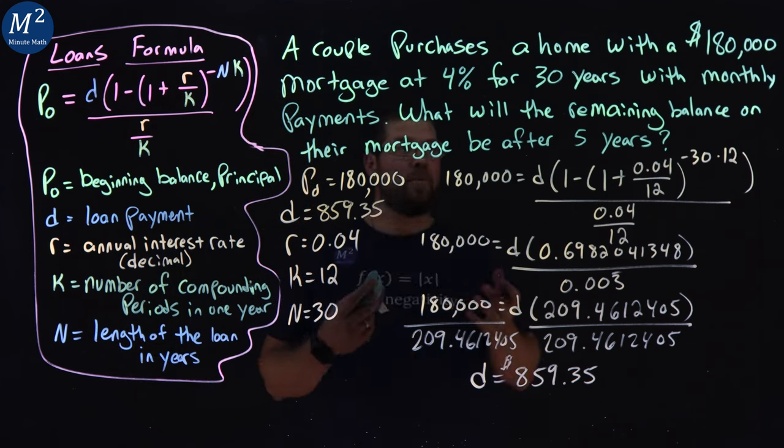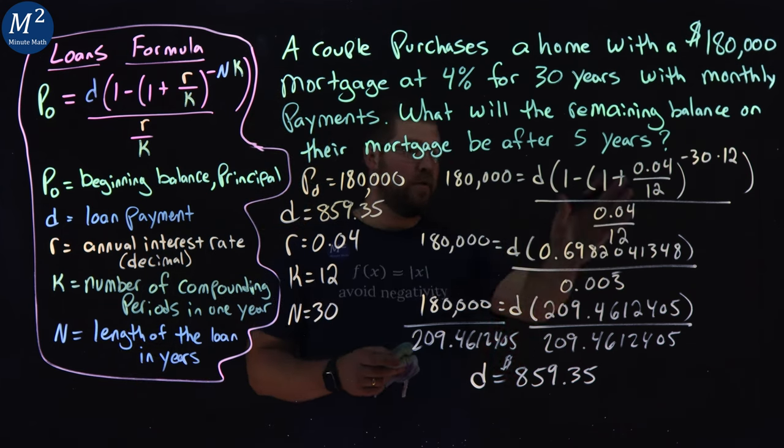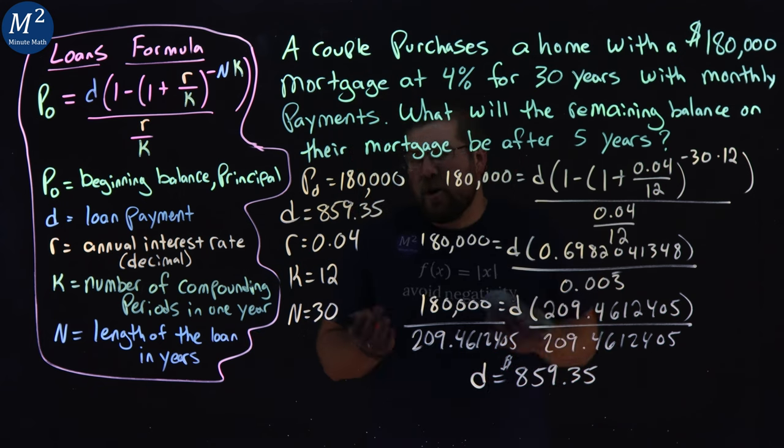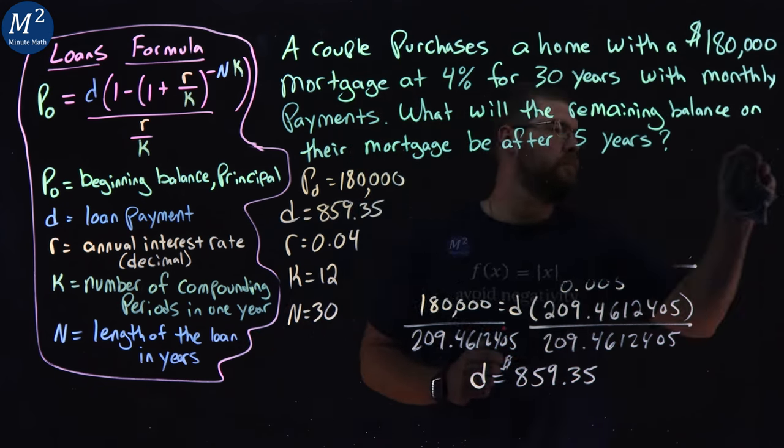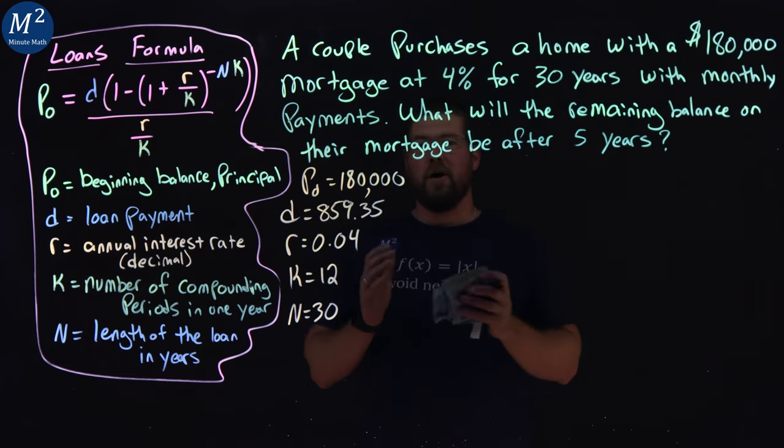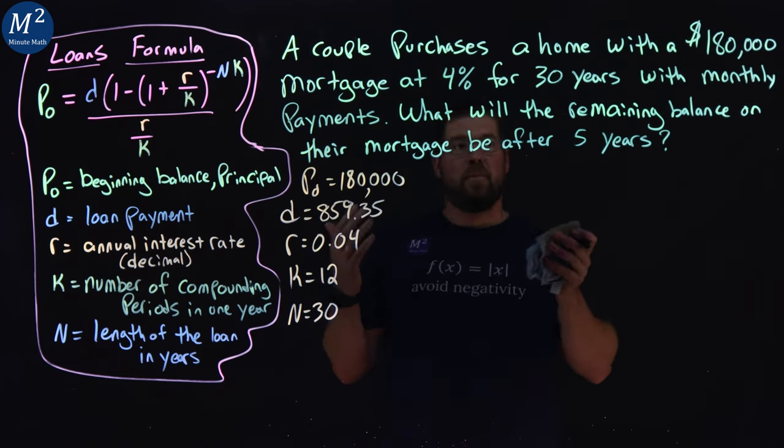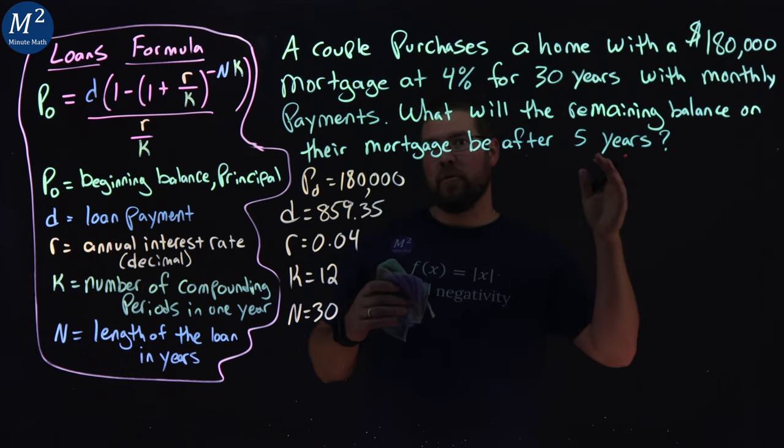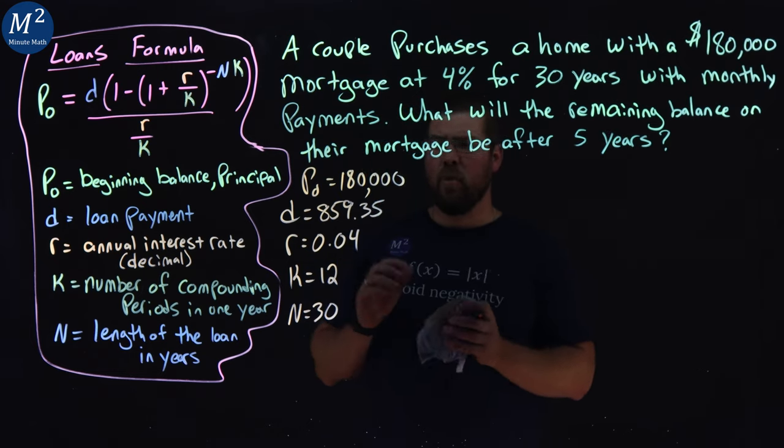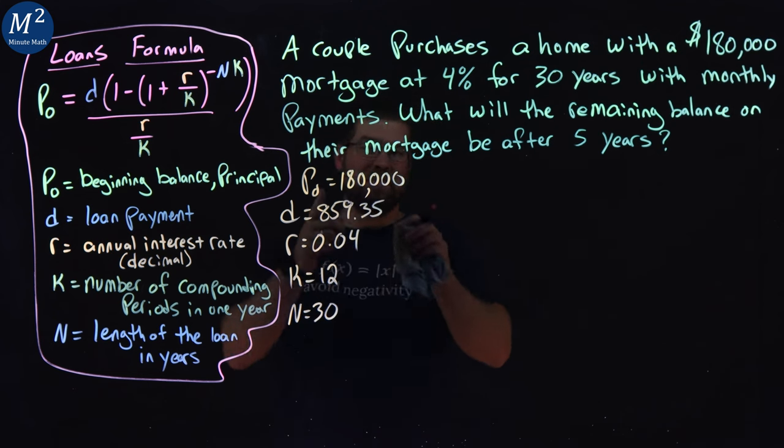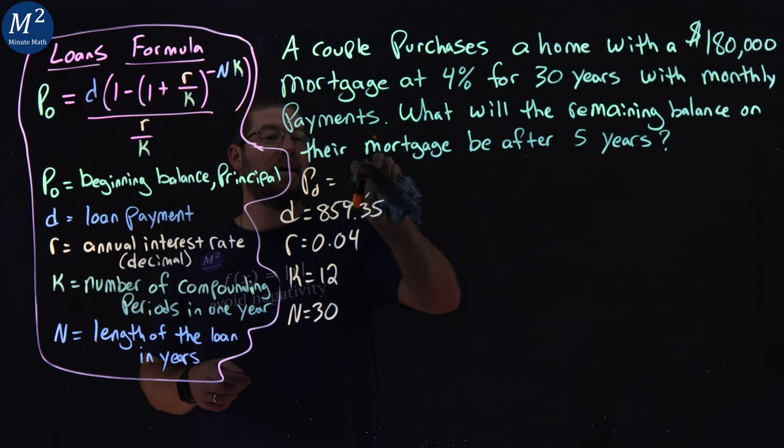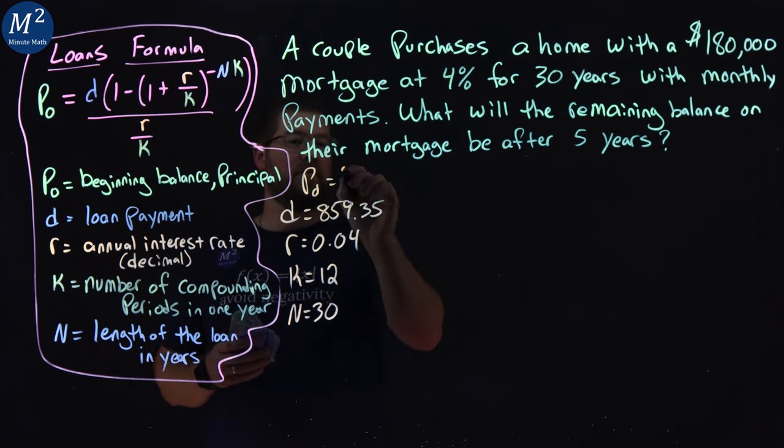And now we're going to apply the second part of our formula. So I'm going to erase this here, and then we're going to solve the rest of it. All right. So now we're at the second half of the problem. We want to find the remaining balance on our mortgage after five years. And so what this changes here is our P sub 0 value, which we don't know yet. Now we want to see how much is on the balance left.